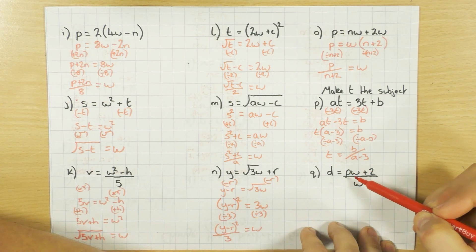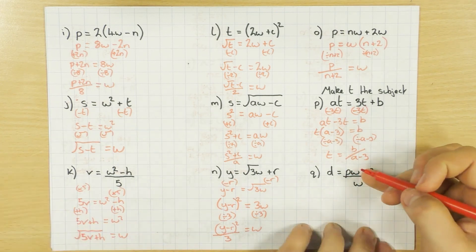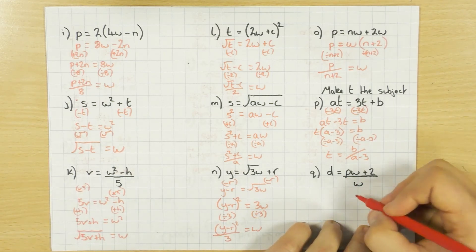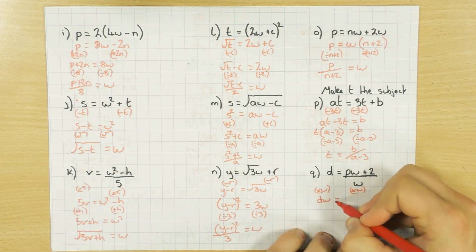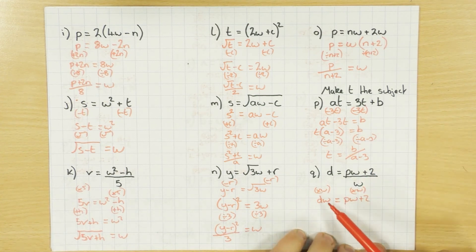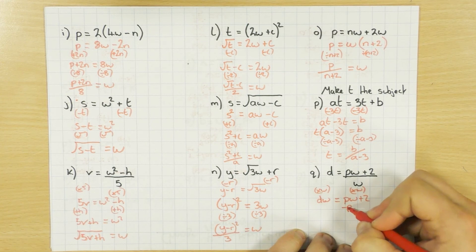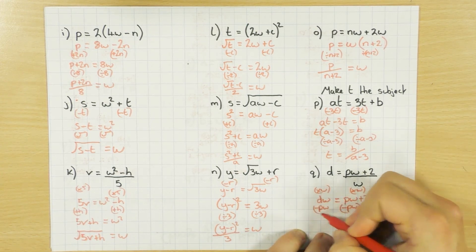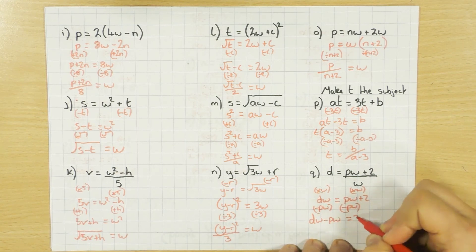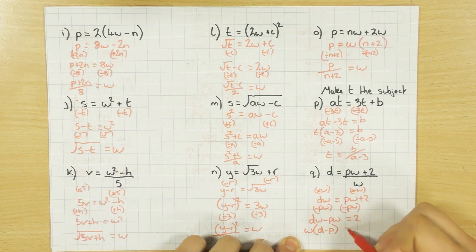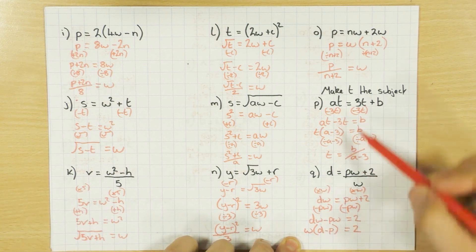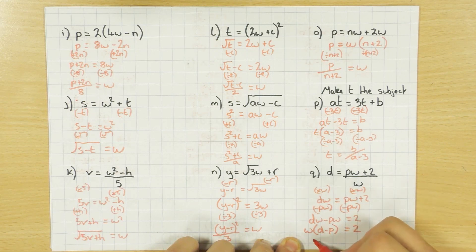Back to W — I've got a W at the top and a W on the bottom. Because I'm dividing by W, I'm going to multiply W on both sides to get rid of that, giving DW on the left and PW plus 2 on the right. Just like before, I've got my Ws on two different sides — I want them all on the same side. So I take away PW from both sides, leaving DW minus PW equals 2. Then I factorize: W outside the brackets, D minus P inside, equals 2. Then I divide by (D minus P), so W equals 2 divided by (D minus P).